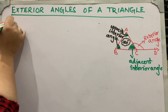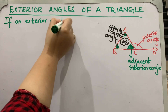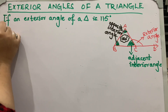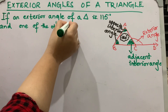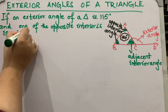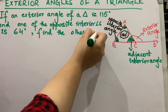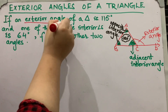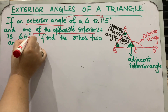Next question: if an exterior angle of a triangle is 115 degrees and one of the opposite interior angles is 64 degrees, find the other two angles. The exterior angle is equal to 115 degrees, and one of the opposite interior angles is equal to 64 degrees.